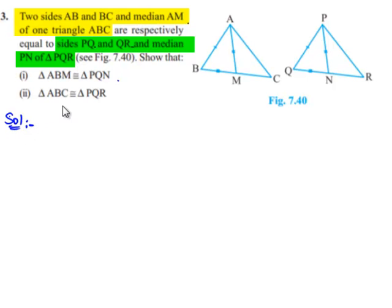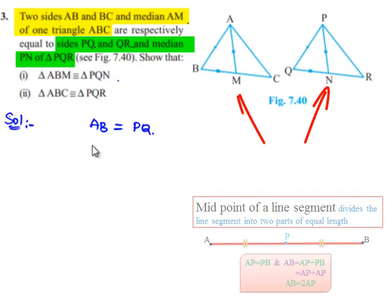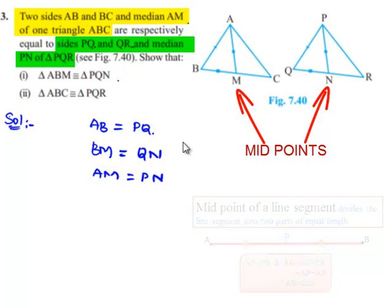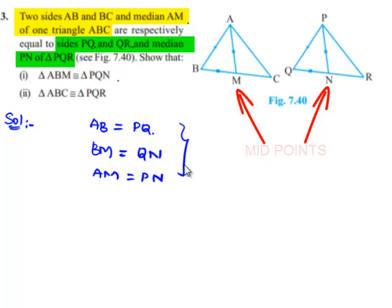It is given that side AB in triangle ABC is equal to side PQ in triangle PQR, and also BM is equal to QN, and AM is equal to PN. This is the given data.